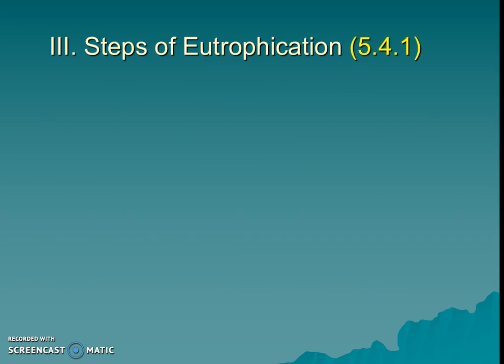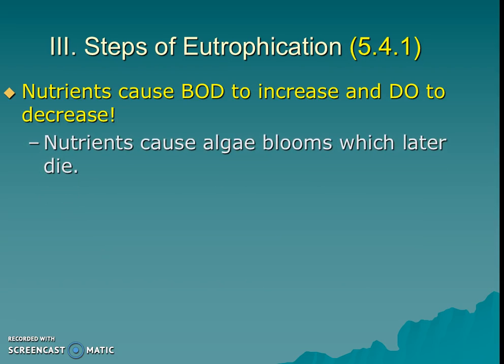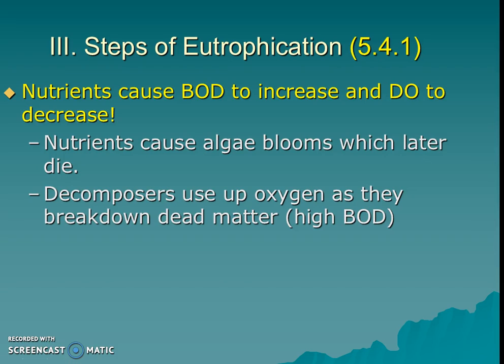As we think about cultural eutrophication, it goes through a couple of steps. The big idea is that nutrients cause BOD to increase and DO to decrease. The nutrients — nitrates and phosphates from fertilizer — cause plants and algae to bloom, because algae is plant-like and loves fertilizer. Later they die, usually because they have less sunlight.